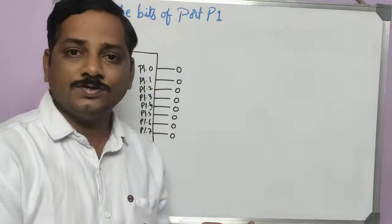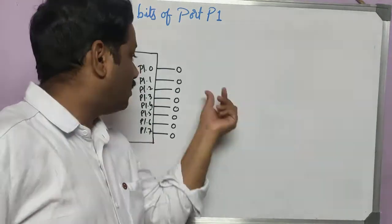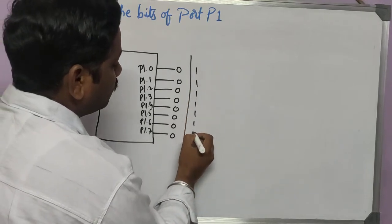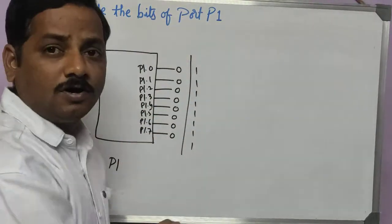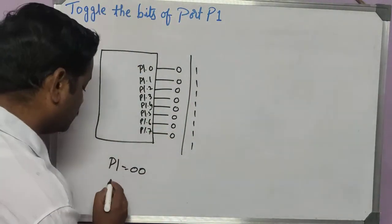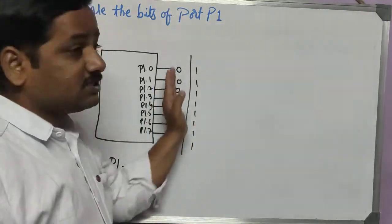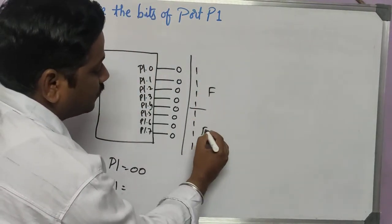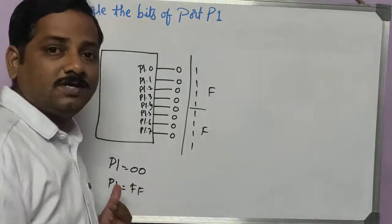To do this, you just assign 0 to port 1, give some delay, and then assign all bits high — meaning all 8 bits become 1, which is represented as FF in hexadecimal. So you need to assign these two values in the program: first 00H to P1, and then FFH to P1. All bits going from 0 to 1 — every bit changed to 1 — that is nothing but toggling.